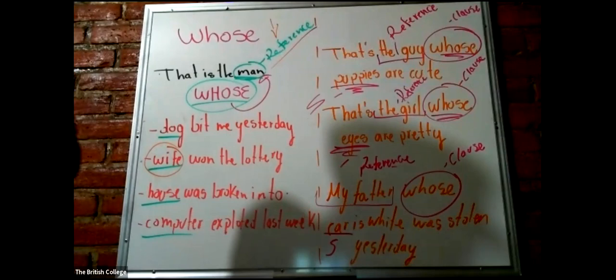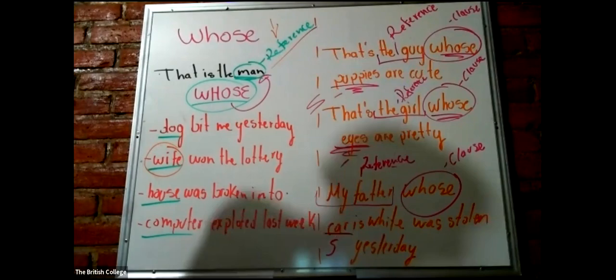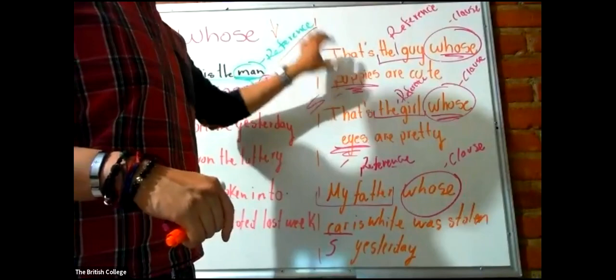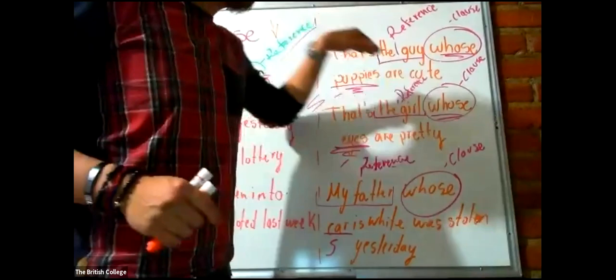No sé si ya queda más claro esto, chicos. Yo pongo that is the boy, the girl, the man, the woman, the teacher, the doctor, etc. Whose? Pongo un objeto o una persona y lo que va después de ese objeto o en ese momento me enfoco en eso. Pongo un verbo ahí o pongo lo que sea, chicos. Vamos a ver.